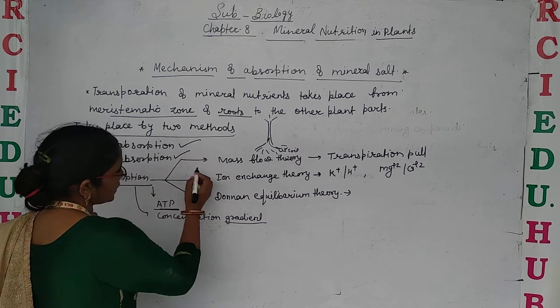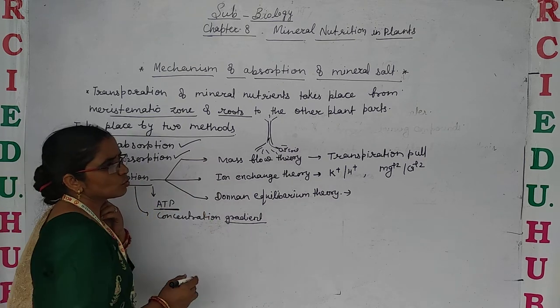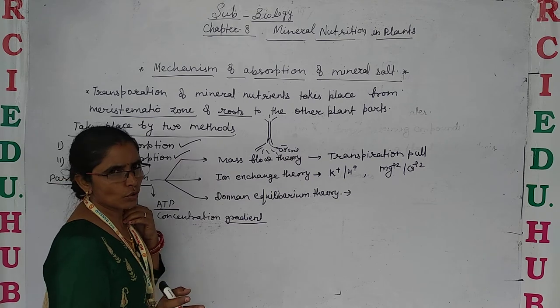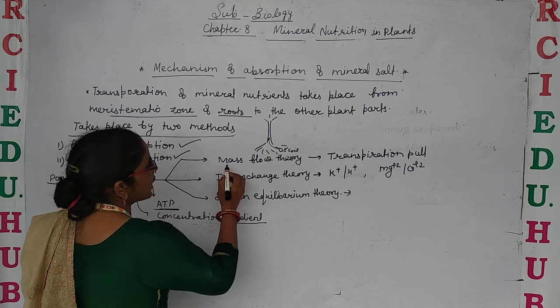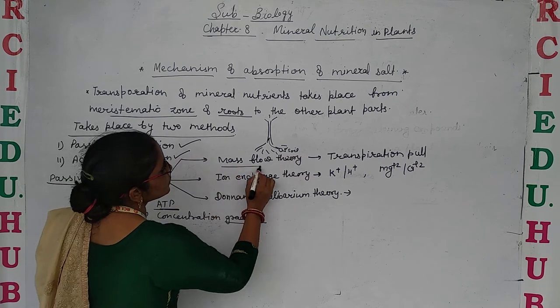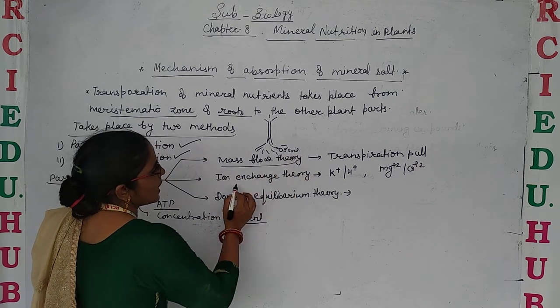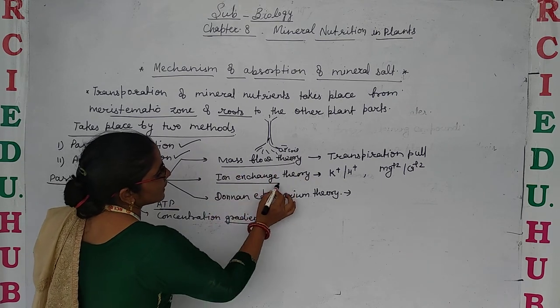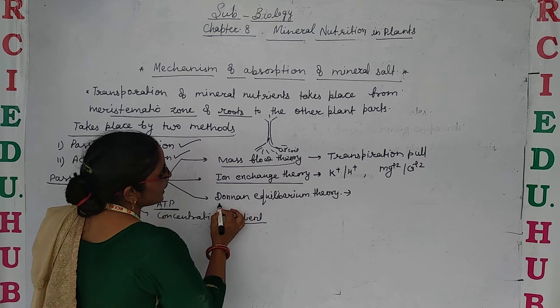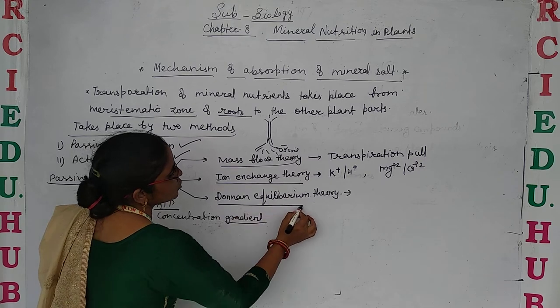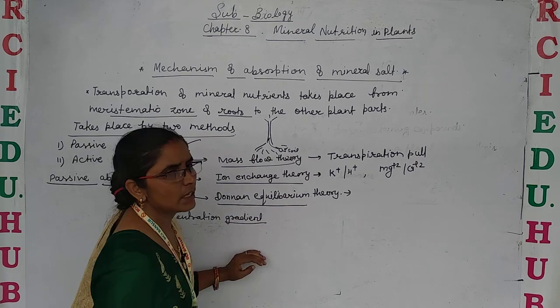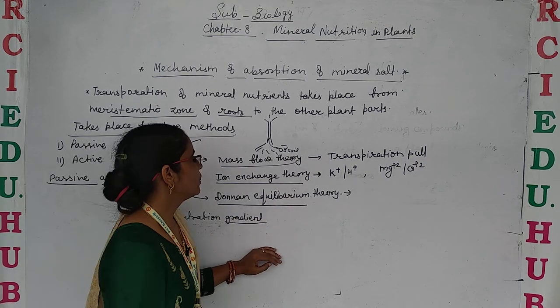Passive absorption takes place through three main theories: one is the mass flow theory, another is the ion exchange theory, and the next one is the Donnan equilibrium theory.